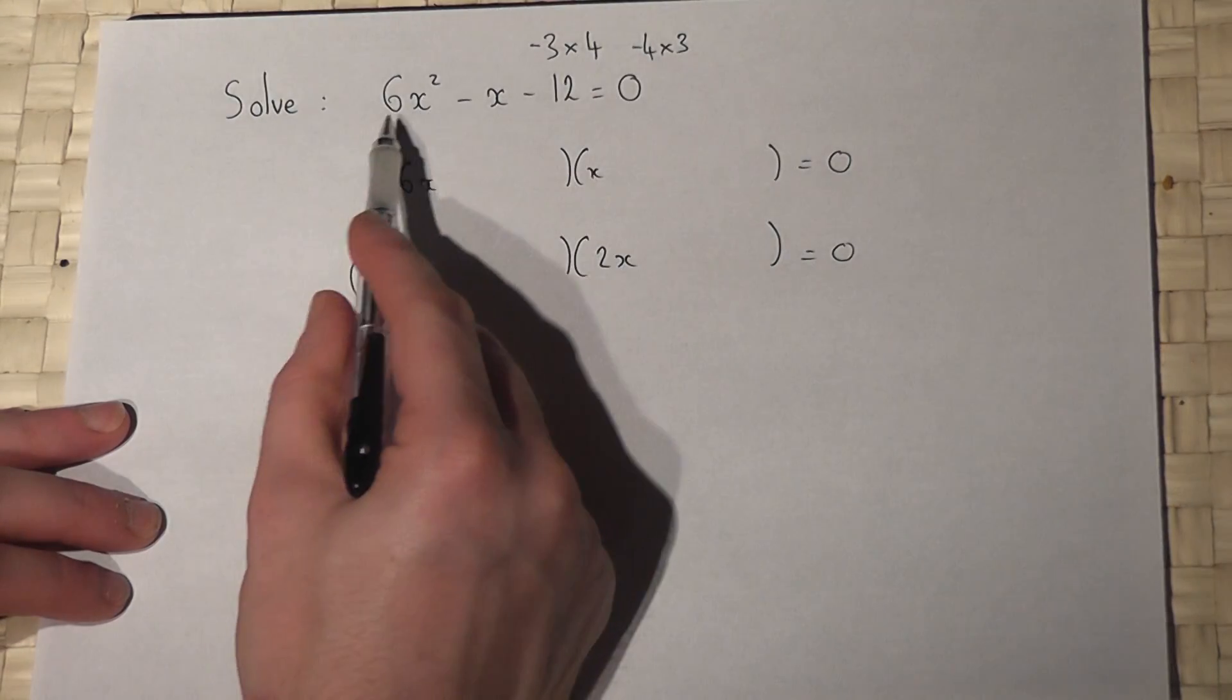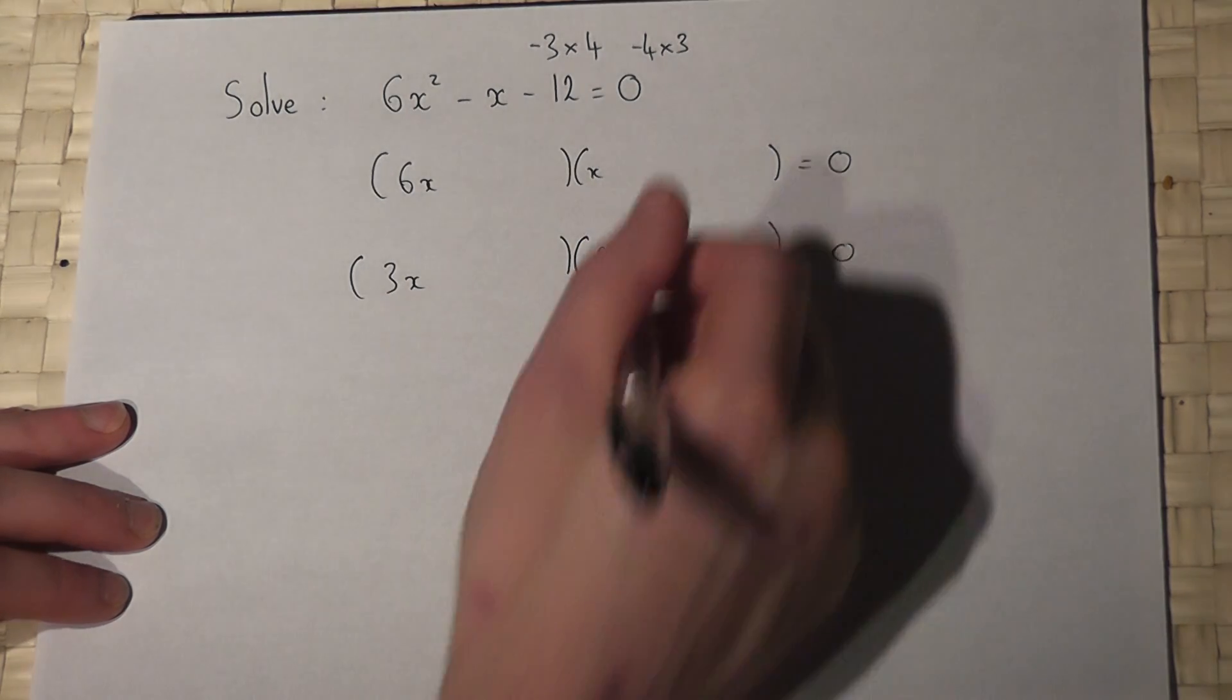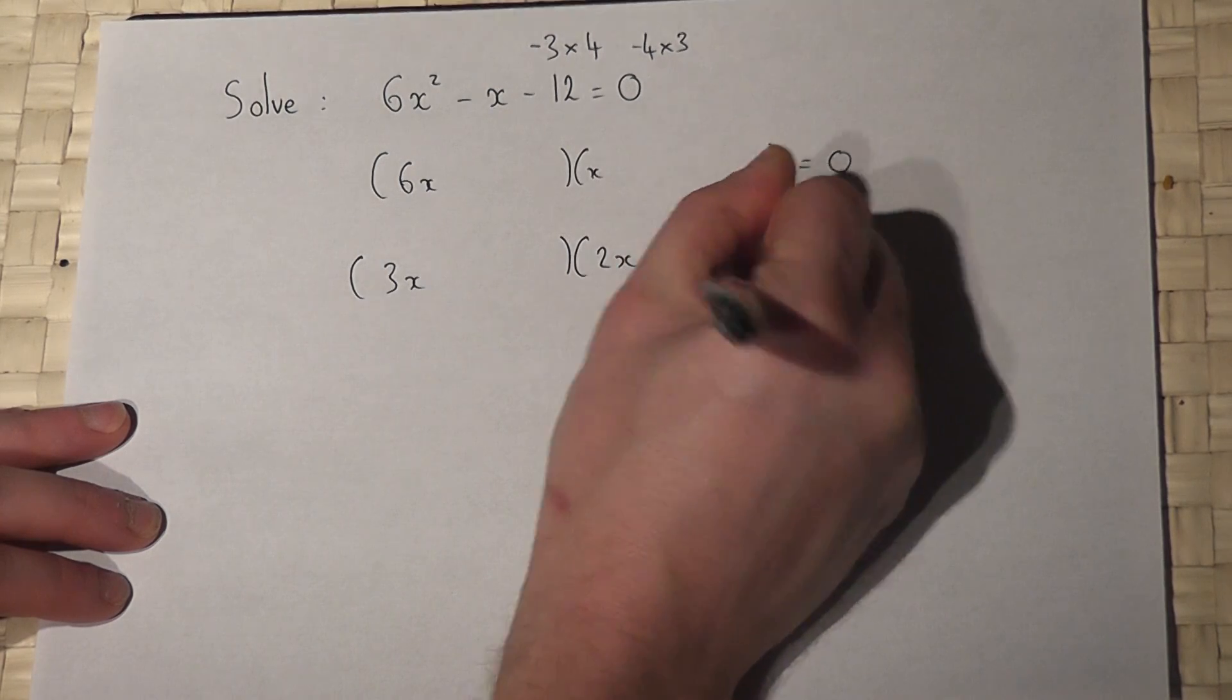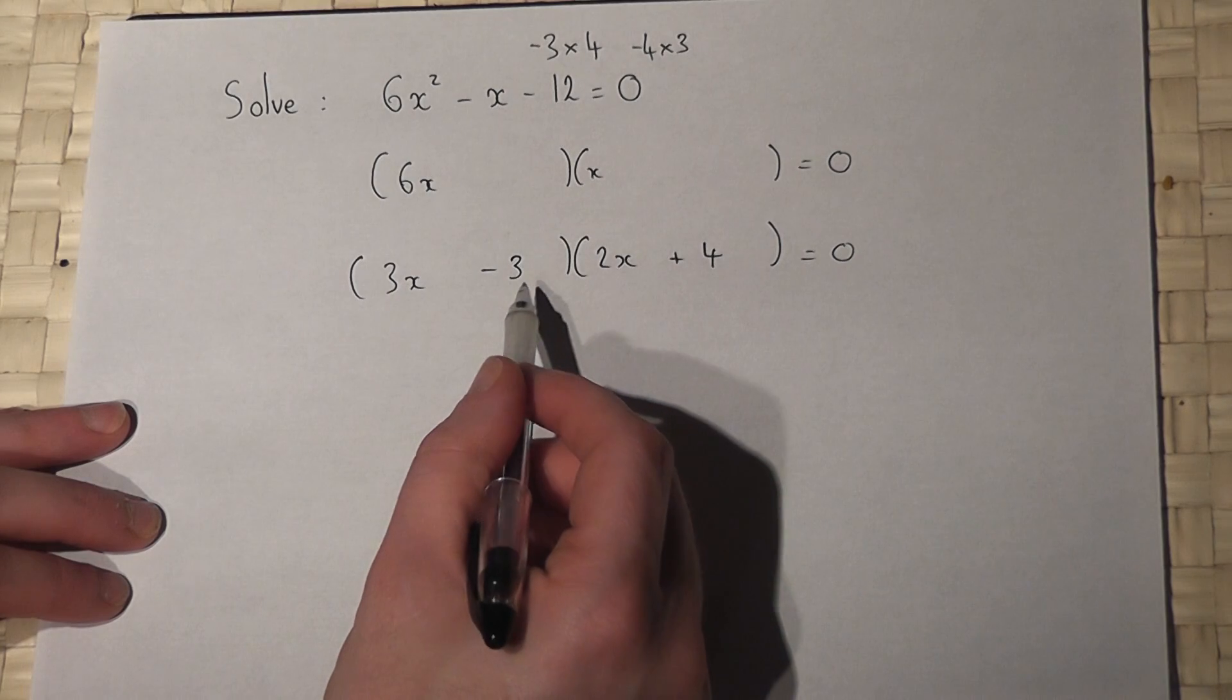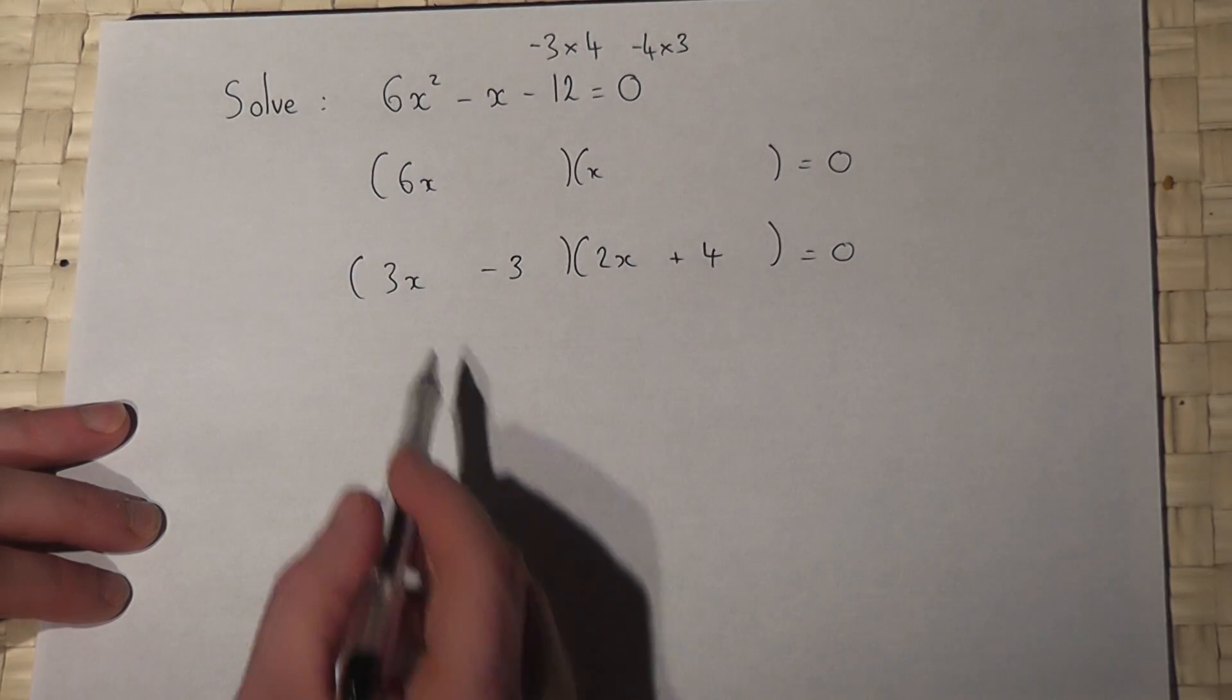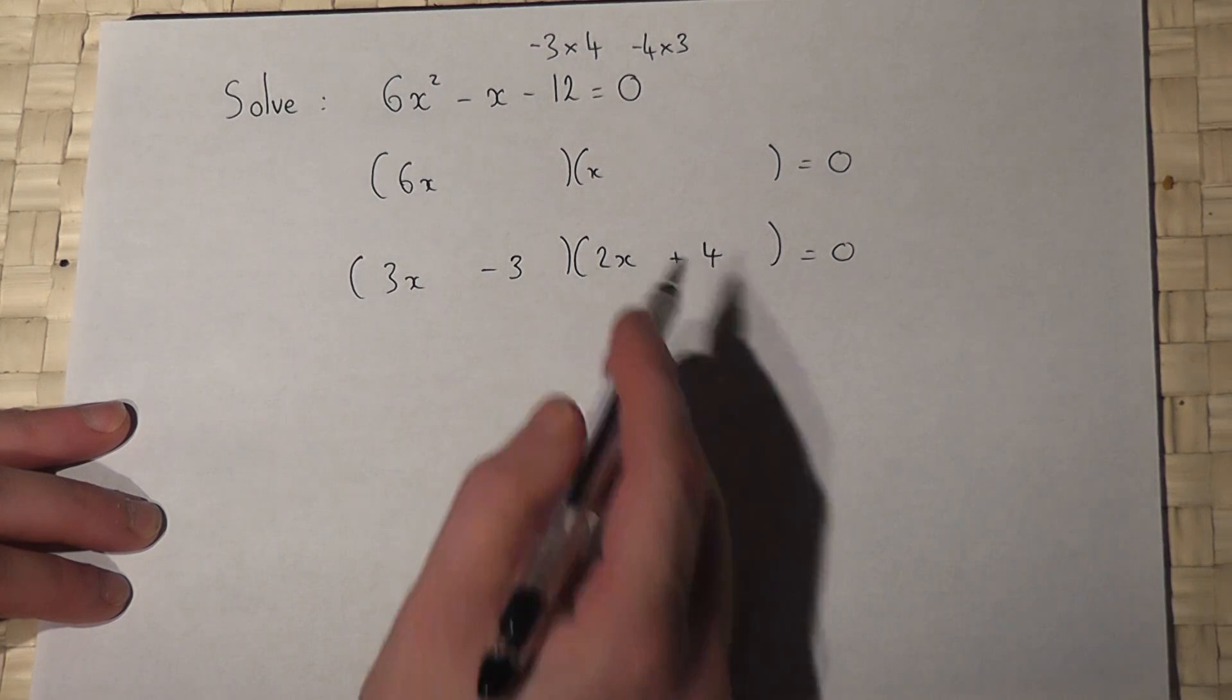Now, for example, if I were to put a plus 4 there and a minus 3, then even though minus 3 times 4 is minus 12, here I get 12x take away 6x, which is 6x.